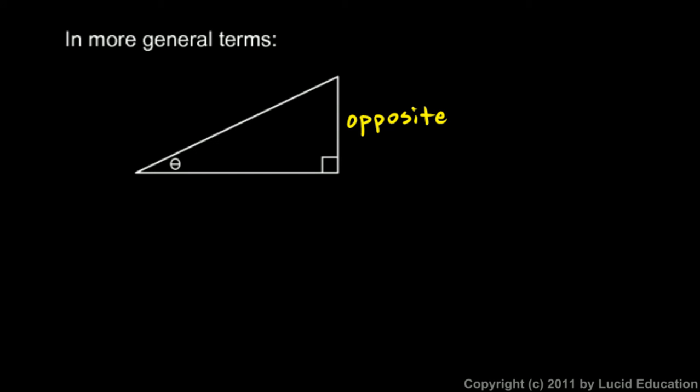This side down here we say that side is adjacent to angle theta, so write that in down there, adjacent. And the word adjacent just means next to, like the United States is adjacent to Canada because they share a border, so adjacent means next to.